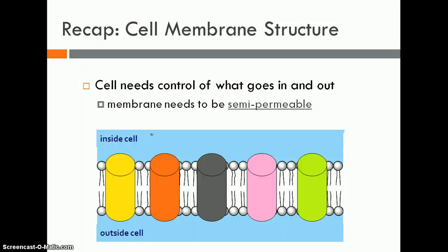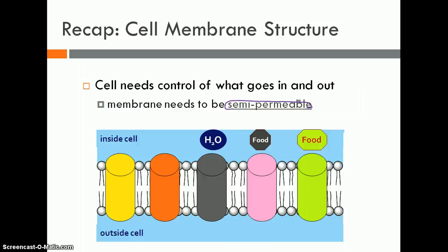Looking at this diagram, we can see the structure of the cell membrane — the little heads with two little tails — with all these different colored channels embedded within it. The cell membrane is semi-permeable, meaning it has a little bit of control over what can enter and exit. It's not completely permeable; not everything can go in and out. Just a few things can, so it can pick and choose. Most things move through specific channels — there's a specific channel for food, for water, and for waste.